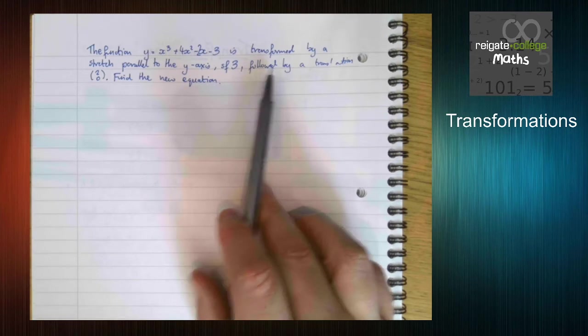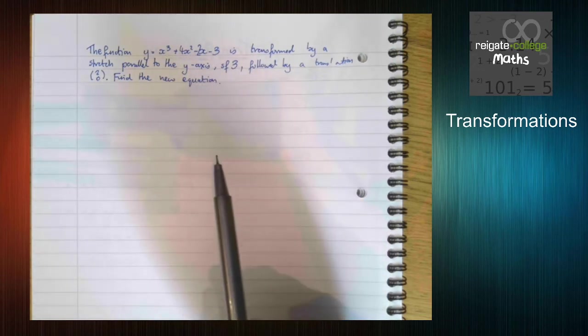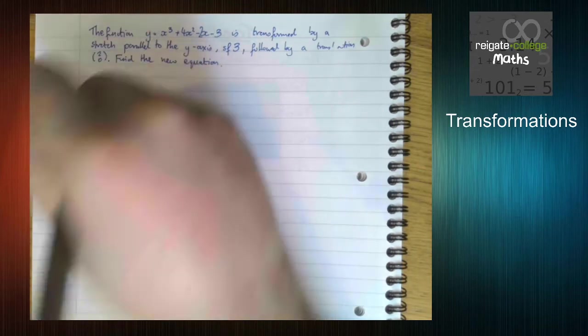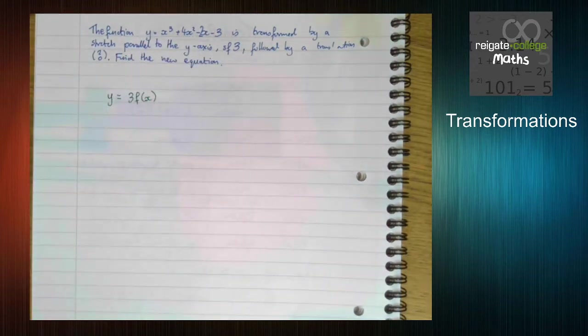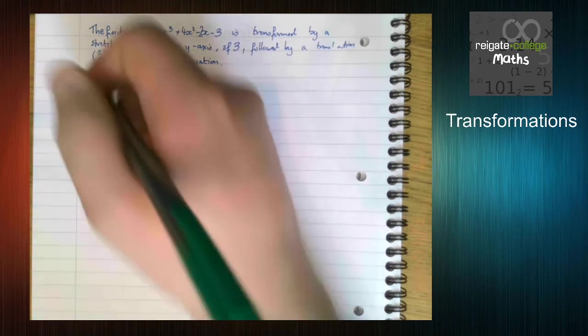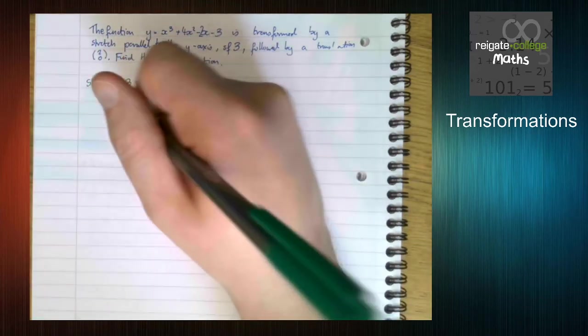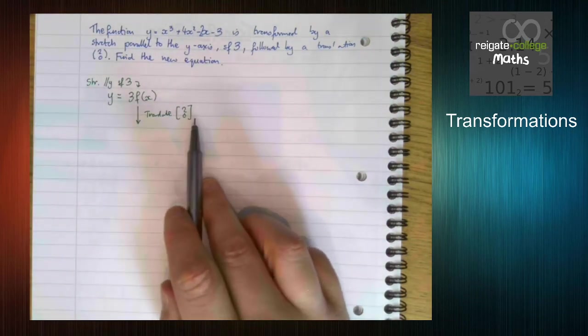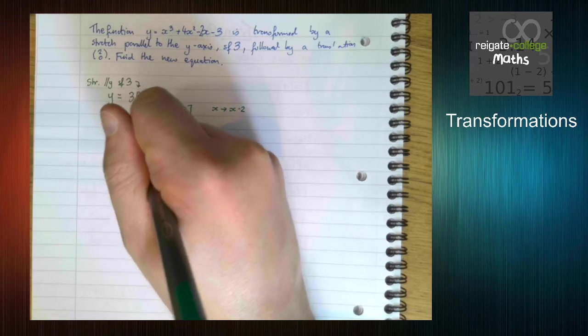First off, sometimes you'll be told the order. In this case, the order still doesn't matter. Even though we've been told we do this one first, it would still get the same answer if you did it the other way round. So let's think about what happens. So stretching parallel to the y axis, scale factor 3, that takes the whole equation and times y by 3. If we then translate by 2, 0. So this is transformation 1. So stretch parallel to y, scale factor 3 does that. Then we translate 2, 0, that changes the x to x minus 2.